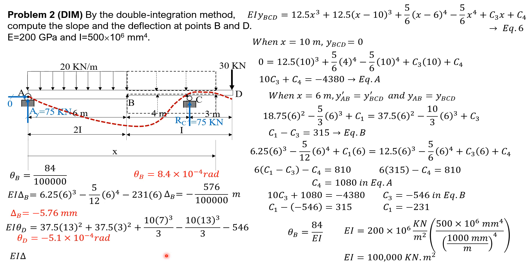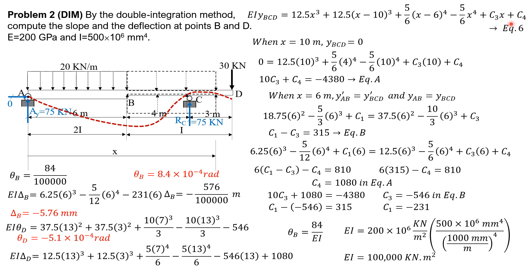Likewise, when X is 13 for delta D: EI delta D equals 12.5 times 13 cubed plus 12.5 times 3 cubed plus 5/6 times 7 to the 4th minus 5/6 times 13 to the 4th plus C sub 3 (negative 546) times 13 plus C sub 4 (positive 1080). Delta D equals negative 18 over 100,000 meters, or negative 0.18 mm. With these values we can draw the approximate elastic curve. I hope you were able to understand the solution.